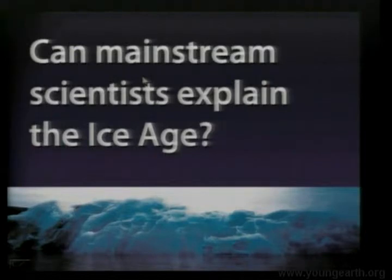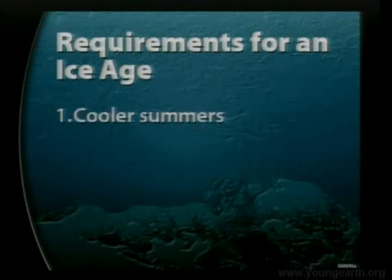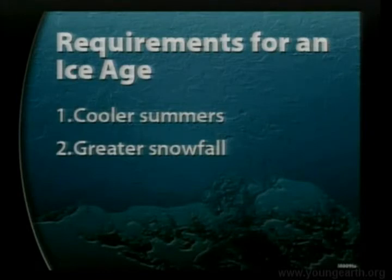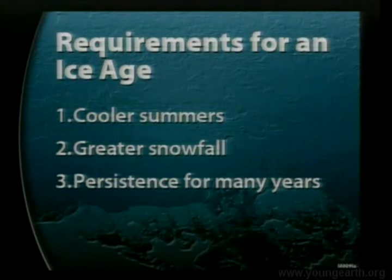Can mainstream scientists explain the ice age? Sometimes the way people talk, it sounds like the ice age is a showcase for uniformitarian geology — but actually it's quite the opposite. To understand why, we need to know the requirements for an ice age. First, you need cooler summers — most areas where ice occurred are already cold enough in winter, so cooling summers is the key requirement. Second, you need much greater snowfall that persists year after year. The snow builds up, changes to ice either by pressure or by meltwater percolating down and refreezing — those are the two ways ice forms from snow.